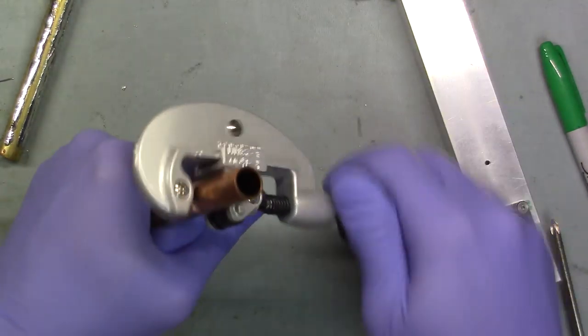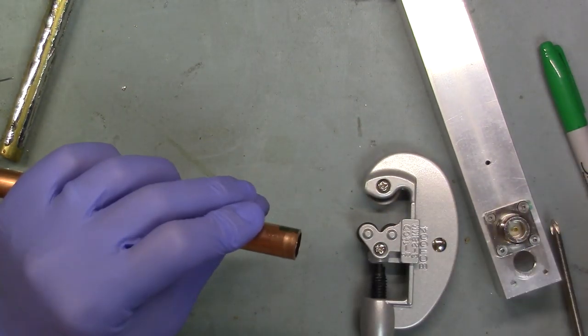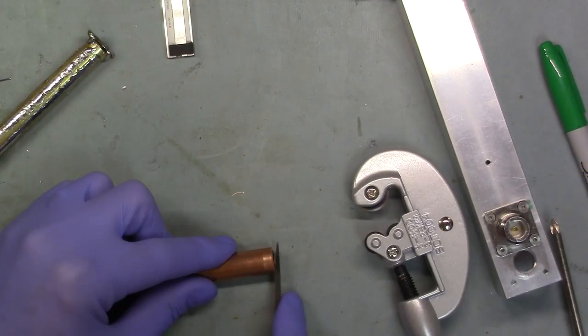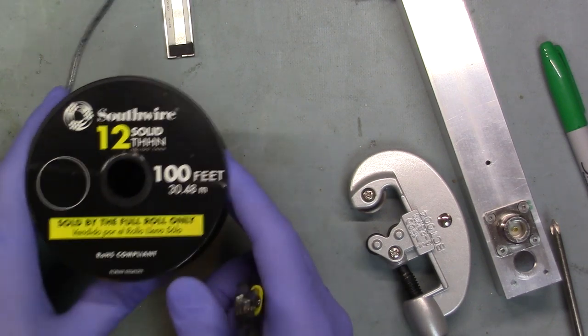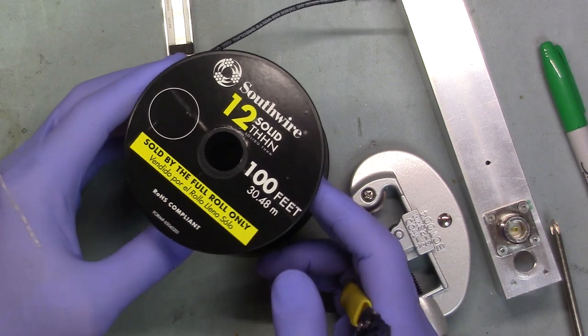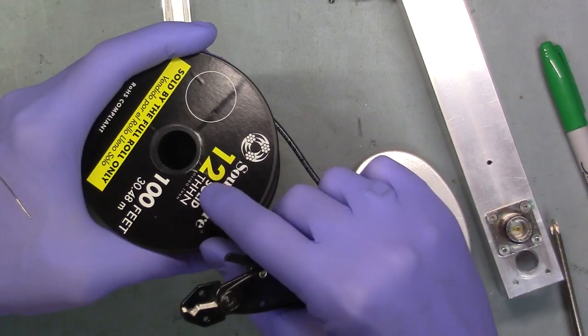This is the thinnest wall stuff they had. There we go. Look how beautiful that came out, huh? Okay, so we're using number 12 American wire gauge. This wire is full of tunes.